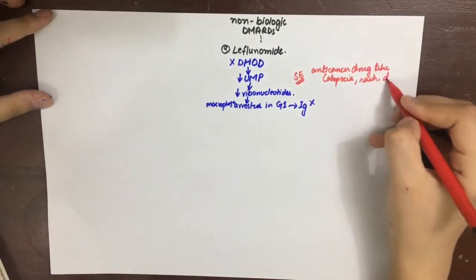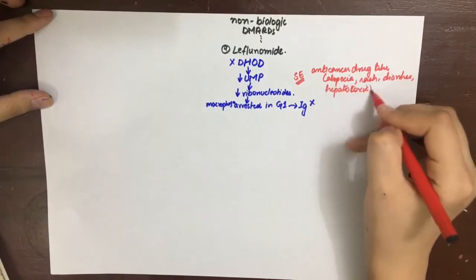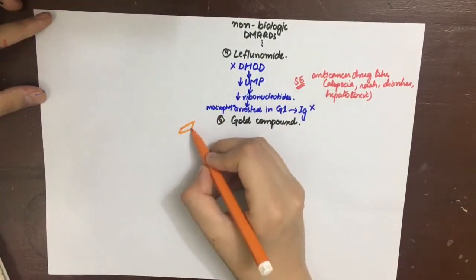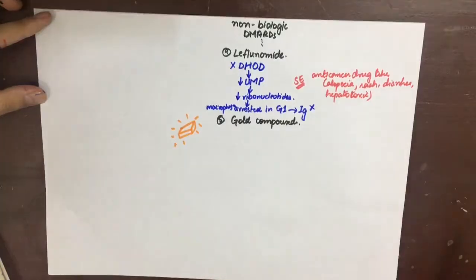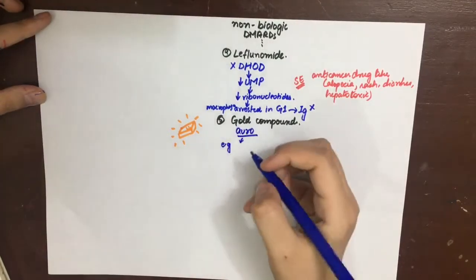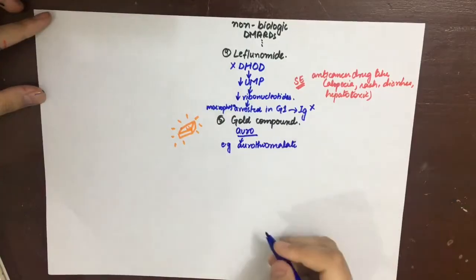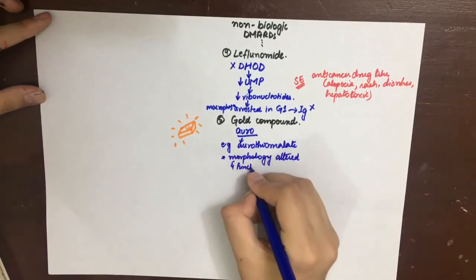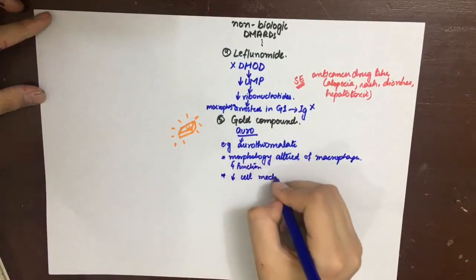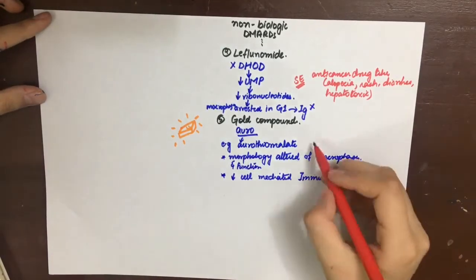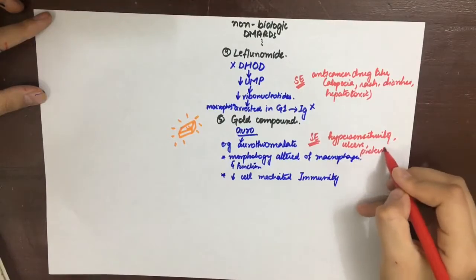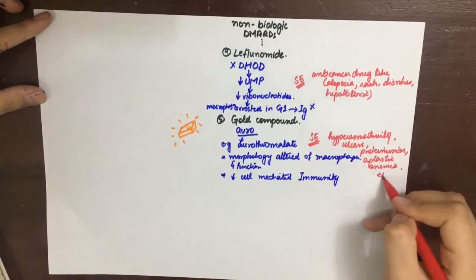The next drugs are gold compounds — all drugs with 'auro' in them, for example aurothiomalate. Gold alters the morphology and function of macrophages, which are involved in cell-mediated immunity, thus decreasing the immune response. Side effects include hypersensitivity-like reactions, itching, stomatitis, ulcers, proteinuria, and rarely aplastic anemia.